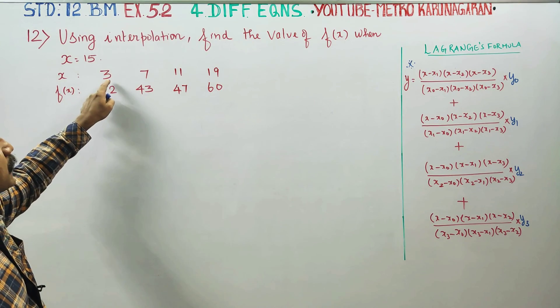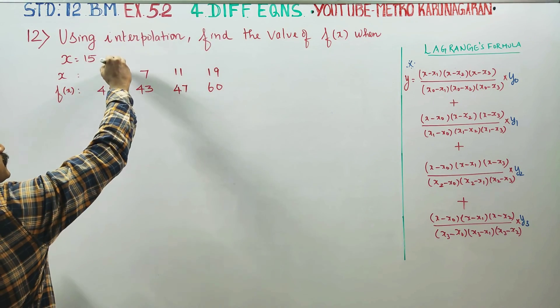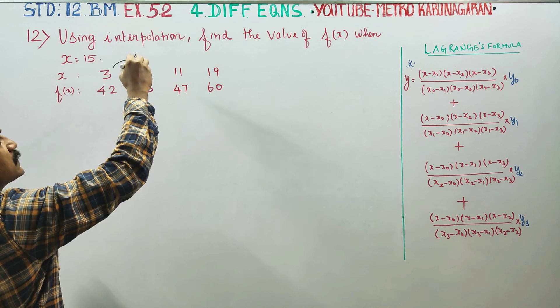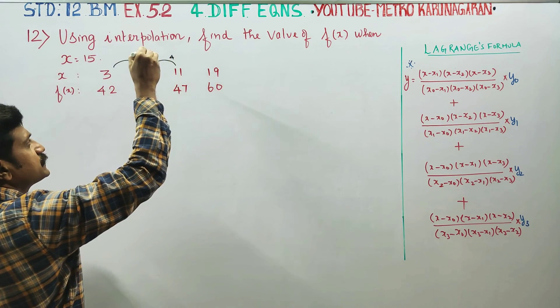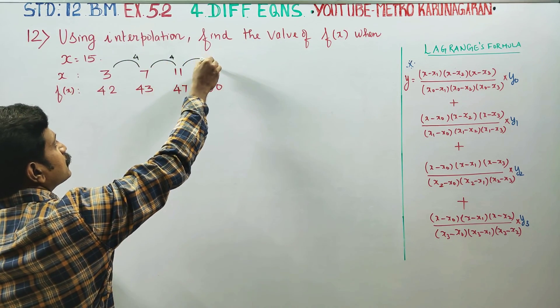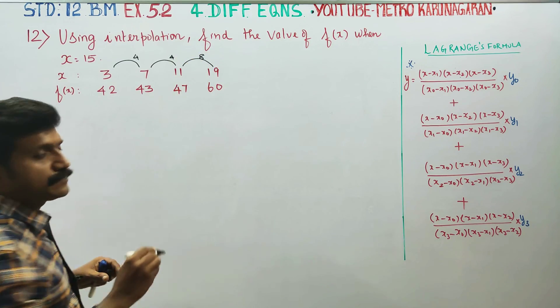In this case, the x intervals are: 3 to 7 with class width 4, 7 to 11 with class width 4, and 11 to 19 with class width 8.